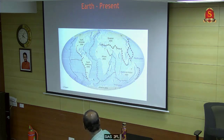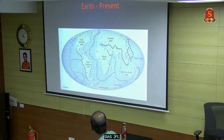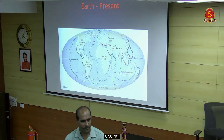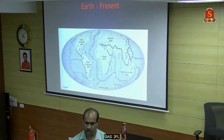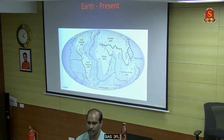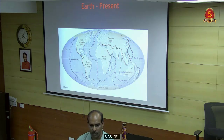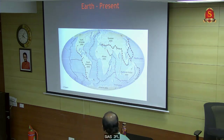Wherever we have a convergent boundary, we get a lot of earthquakes. This is a settling era - the earth is still settling. That is why we get a lot of earthquakes during this era.